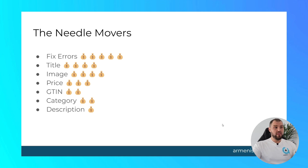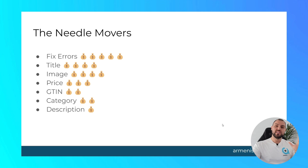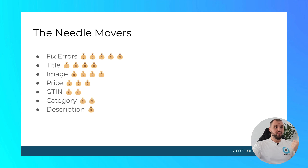The next most important thing in my eyes is the title and the image. These two are incredibly important because they draw people's eyes. Probably the image is more important than the title, but the title triggers the ad. What information is in the title tells Google what your product is. Price is also a very important factor. The GTIN, if you have it, is a way that Google will know what you're selling.